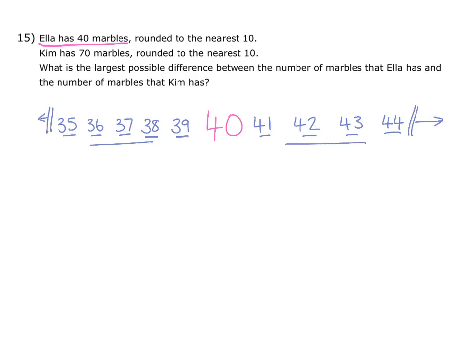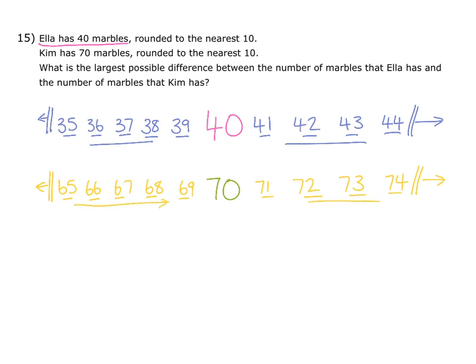Now we'll look at Kim. Kim has 70 marbles rounded to the nearest 10, so once again she could have a selection of possible amounts of marbles. She could have 69, 68, 67, 66, or 65. Anything lower than 65 would round down to 60. And once again she could have an amount higher than 70: 71, 72, 73, or 74. Anything higher than 74 would round up to 80. So these are all the possible amounts of marbles that Kim could have if they were rounded to the nearest 10, as they would all either round up or down to 70.